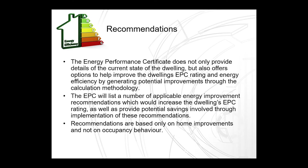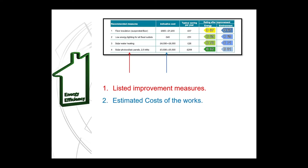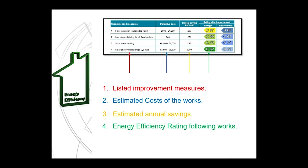Recommendations are based only on home improvements and not on occupancy behaviour. On the third page of the EPC, the recommendations and associated information can be found. On the left-hand side, you can see the listed improvement measures, followed by the estimated costs of the works, then the potential annual savings, the potential energy efficiency rating following works, and finally the potential environmental impact rating following works.